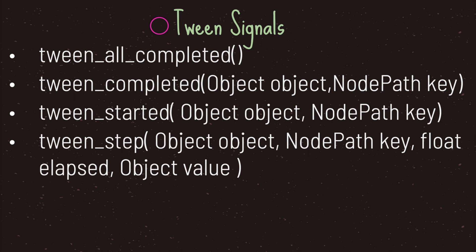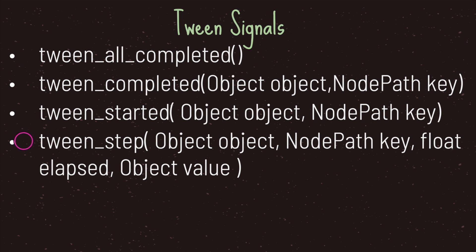The tween class also comes with four signals: tween_all_completed, tween_completed, tween_started, and tween_step. We can send a signal when all tweens are done, when a specific tween is finished, when a tween has started, or on every step of the animation — in each case you need to specify which tween or object you're referring to.